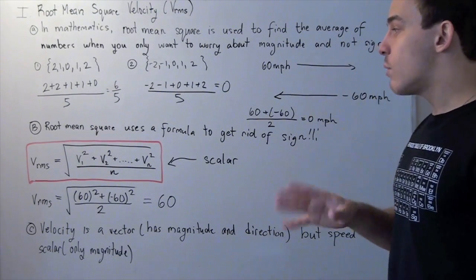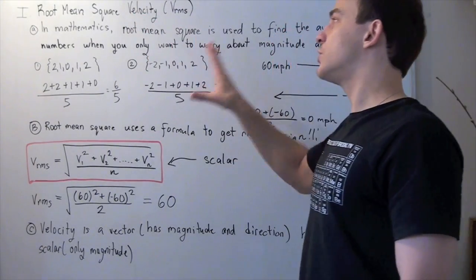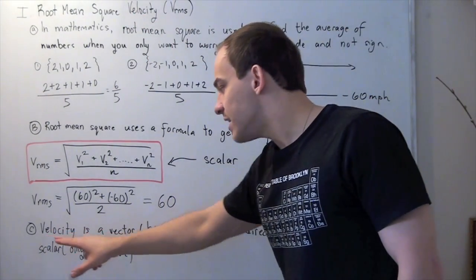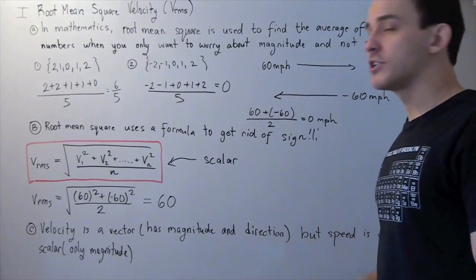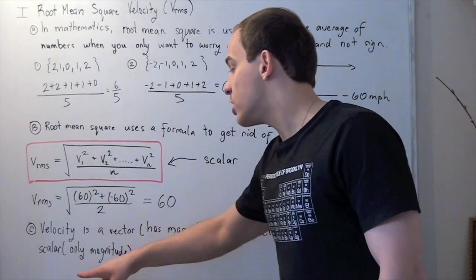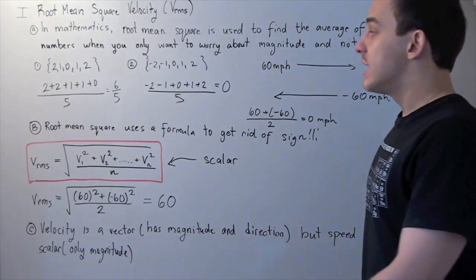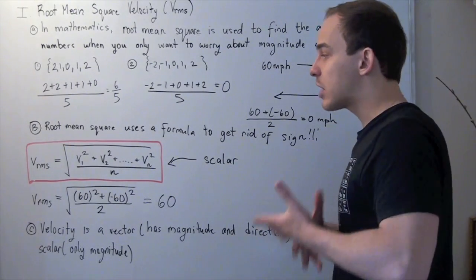Now, one last thing I want to mention is that this definition of velocity is not actually correct. Because remember, velocity is a vector. That means it has both magnitude and direction. While speed is a scalar, it only has magnitude. Now, this velocity only has magnitude. It doesn't have direction.